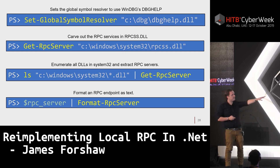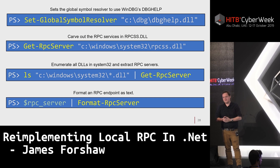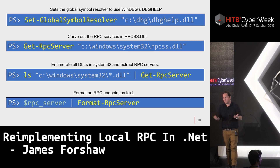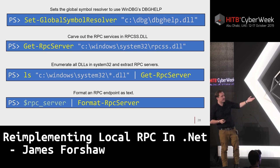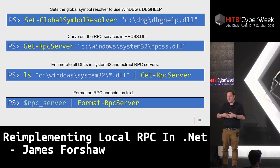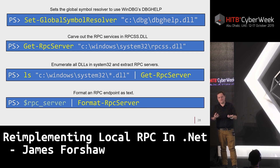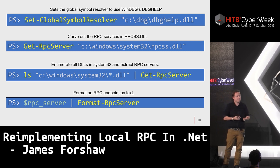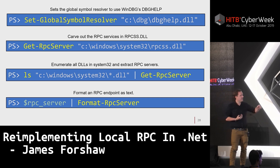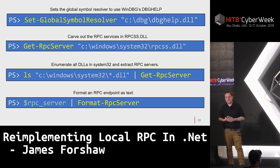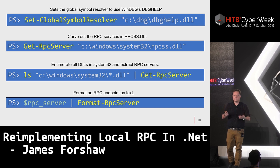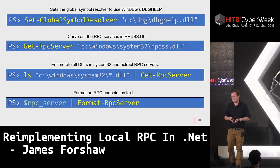You can also pass in a list of DLLs — for example all the DLLs in System32 — and parse all of them. Since the output is a structured .NET object graph, you can manipulate it directly. But there is also a Format-RpcServer command which outputs a C# pseudo-IDL file giving you a rough idea of what the RPC server is doing.